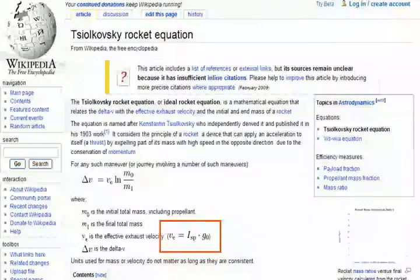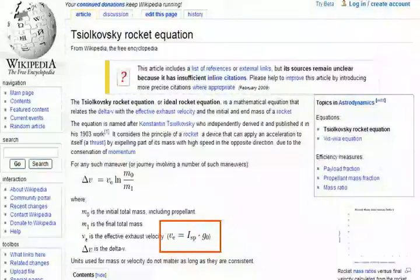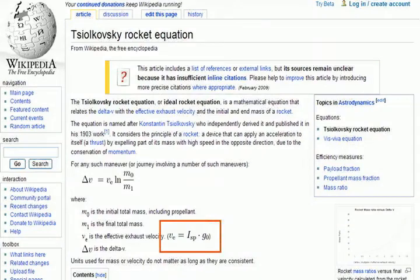VE is defined as ISP, the specific impulse, times G0 in this case, the acceleration due to gravity. The specific impulse tells you what changed momentum you can expect out of a kilogram of propellant. Basically it's an efficiency rating, like miles per gallon is with an automobile. We'll come back to this page in a moment.